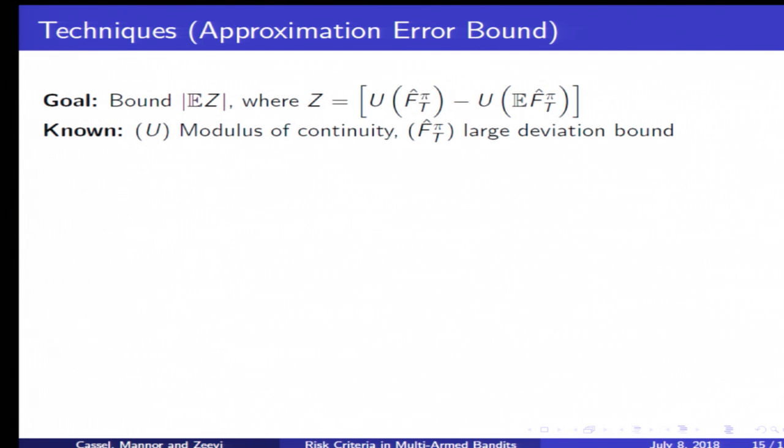The main things we assume by our framework is a sort of local modulus of continuity, which is a fairly weak assumption, together with some large deviation bound, which is essentially the sub-Gaussian type assumption.